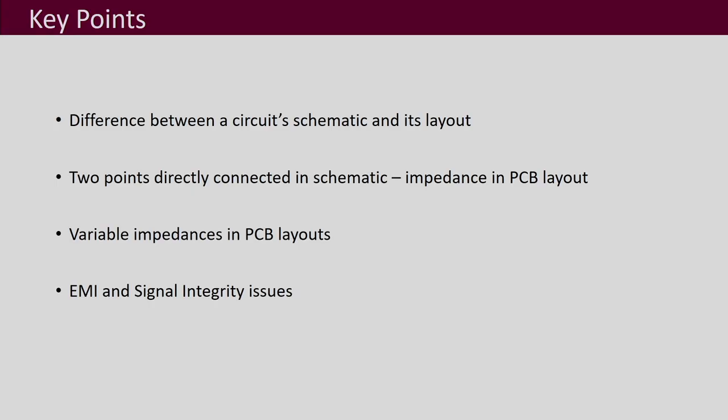Signal integrity issues are more of a concern in digital circuits. The key points of this lecture are: there is a difference between a circuit schematic and its PCB layout. What you show as a direct connection between two points in the schematic is not a direct connection in the PCB — there is impedance between the two points. These impedances in PCBs are variable in nature because of the variable lengths of traces, their widths, vias, and other elements placed on the PCB. Additionally, there are issues of electromagnetic interference and signal integrity in PCBs. While doing the layout of the PCB, one should be very careful about these issues. Thank you.